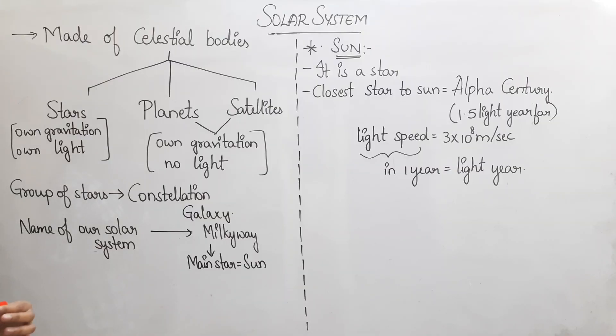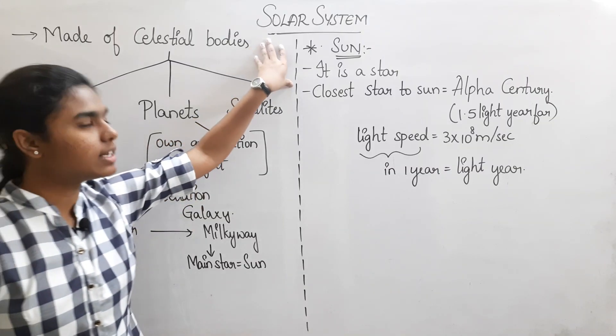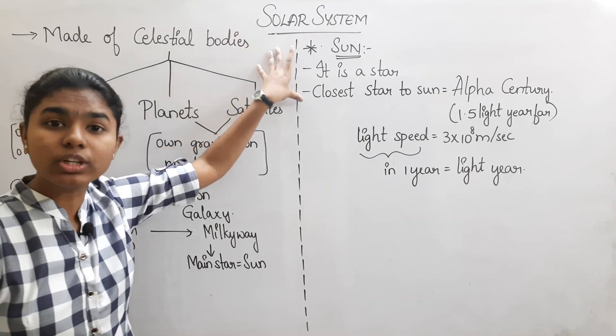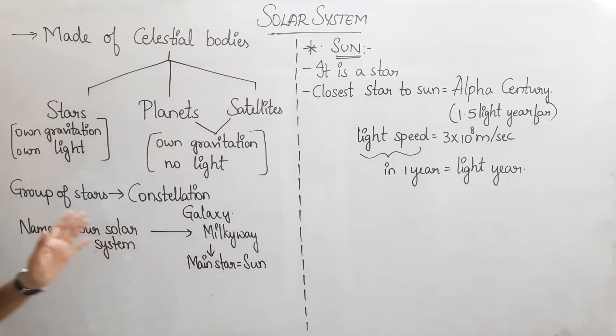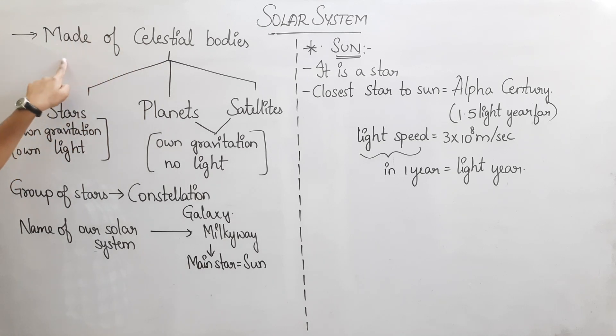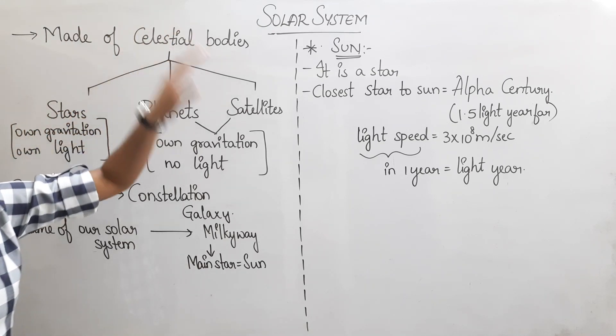We are going to talk about the solar system. What is this solar system? The solar system is made of celestial bodies.